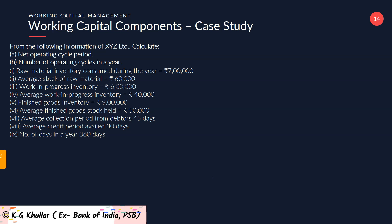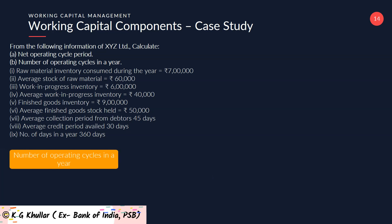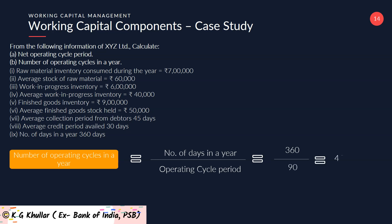Next, let's calculate the number of operating cycles in a year, which equals number of days in a year divided by operating cycle period. This firm takes 360 days as one year, so 360 divided by 90 equals 4 times. So the number of operating cycles in a year for this firm is 4 times.